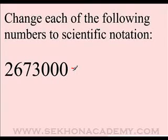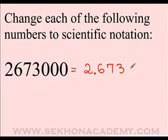The first factor is formed by all digits that are not zero in the initial number. In this case, just copy 2, 6, 7, and 3. Then place a decimal point after the first digit.